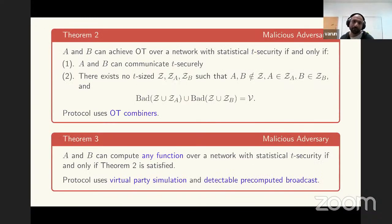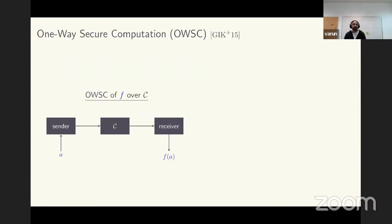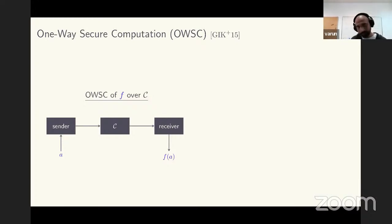Regarding efficiency: in the semi-honest setting, the complexity is polynomial in t, so it is efficient for small values of t. We also show efficiency when t is close to n minus a constant, but we do not have similar efficiency for large values of t in the malicious setting. All our protocols are secure in the size of the adversary structure.